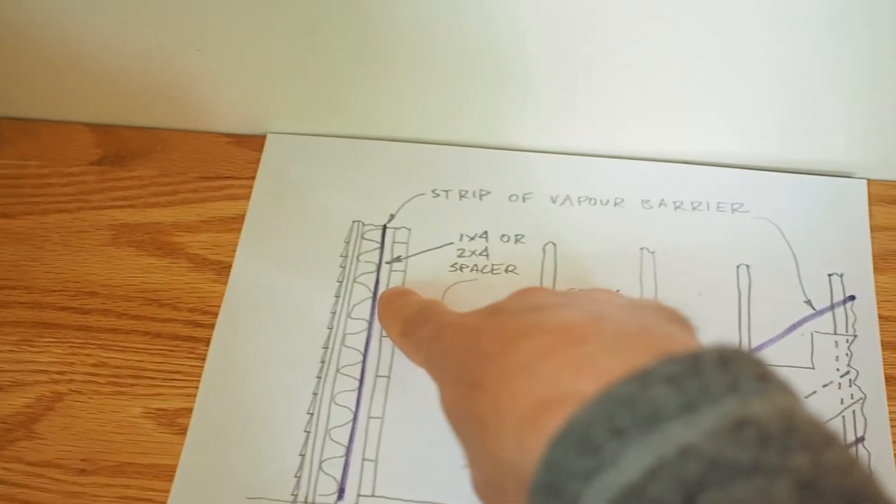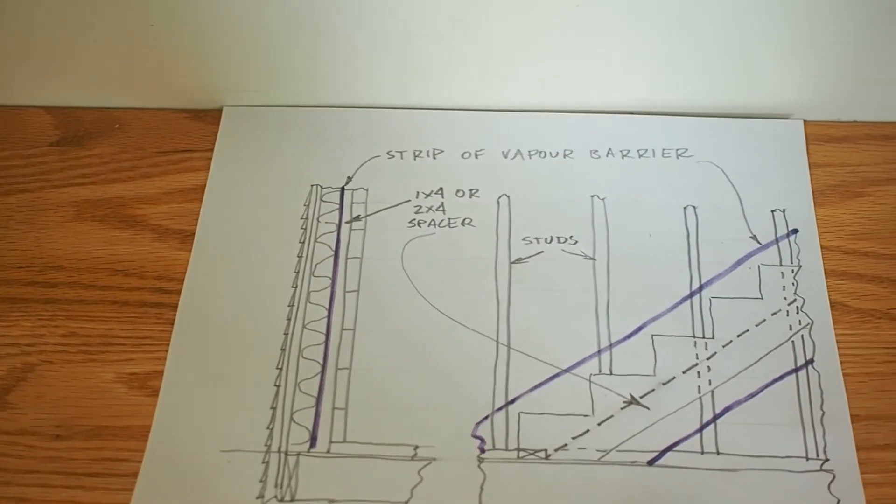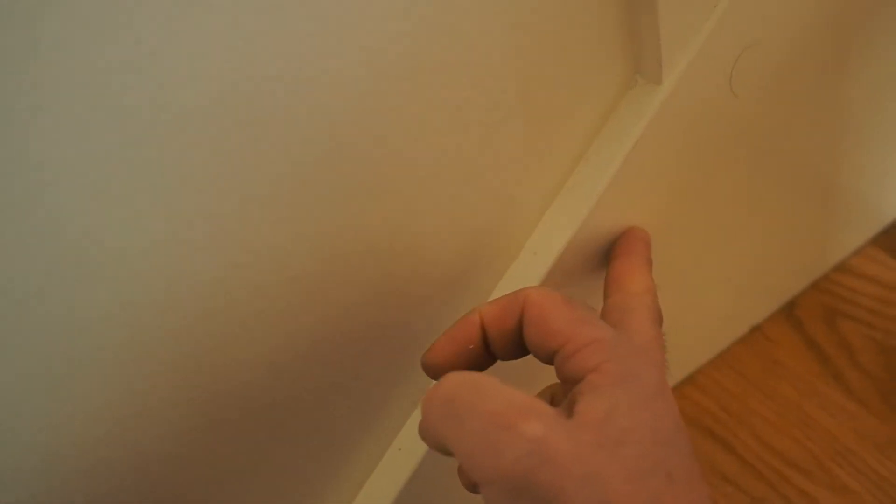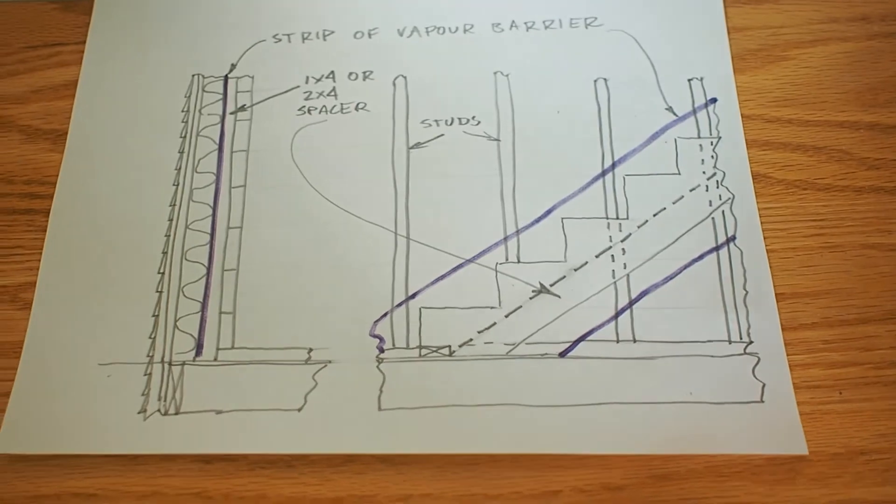The drywall is a half inch thick. A half inch plus three quarters is one and a quarter. The spacer was 2x4 so there was plenty of room to slide both the drywall and this trim piece, the plain stringer, into that gap without fighting anything.